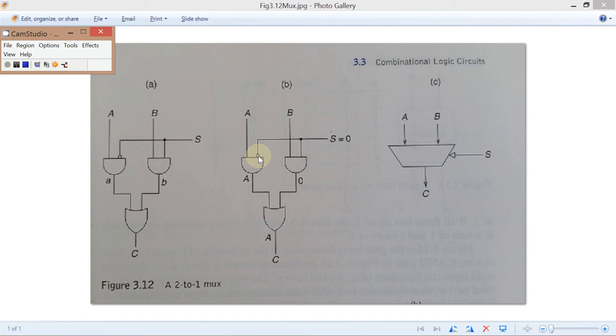Since the output of the rightmost AND gate is 0, it has no effect on the OR gate. Consequently, the output at C is going to be exactly the same as the output of the leftmost AND gate.